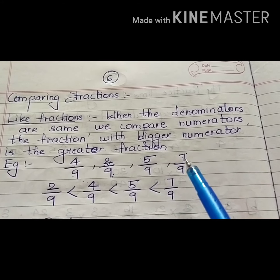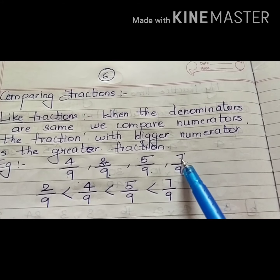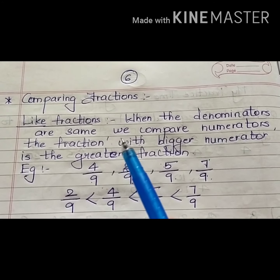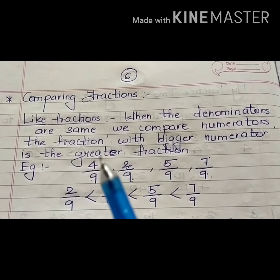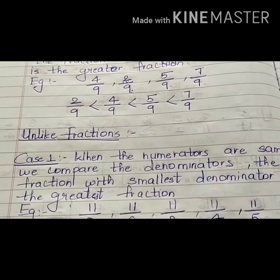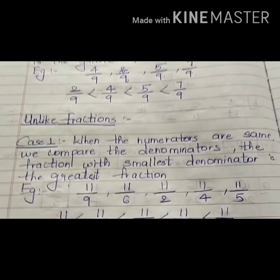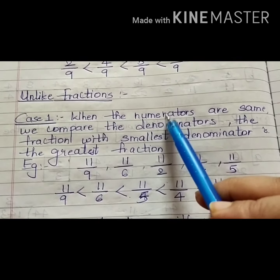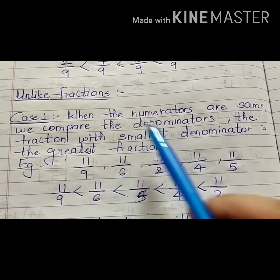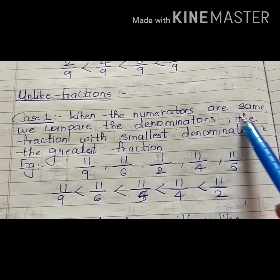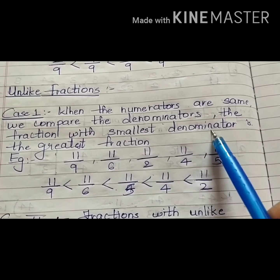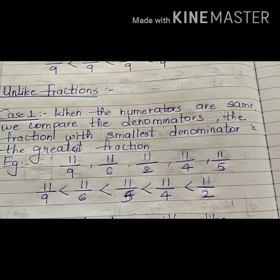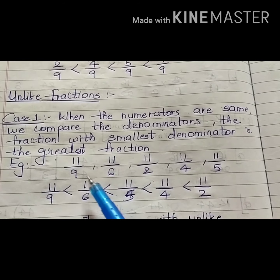Then we have 7 upon 9. Now we will look at comparing unlike fractions. Case one: when the numerators are the same, we compare the denominators. The fraction with the smallest denominator is the greatest fraction — it is the opposite of like fractions.